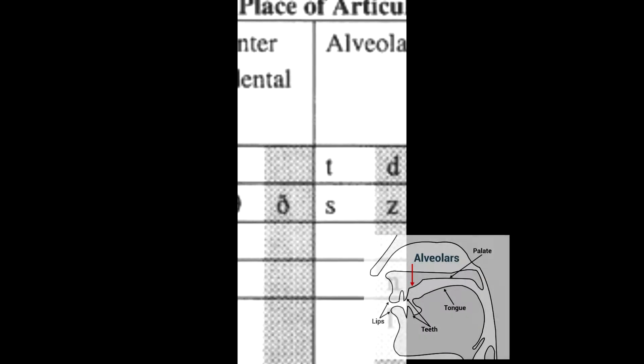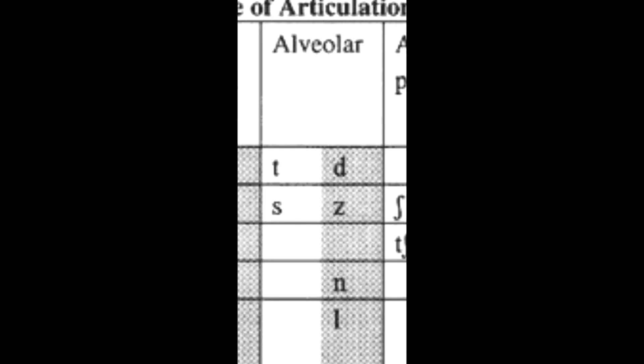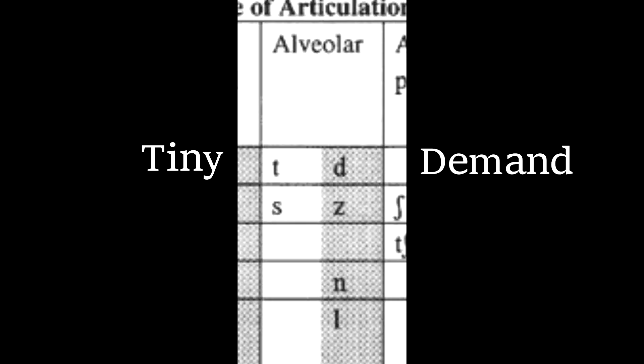The alveolar sounds are ones made at the top of the palate, the top front part of the palate — T and D — with words such as 'tiny' or 'demand'.